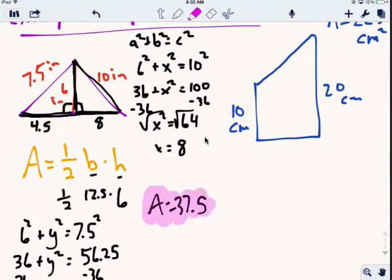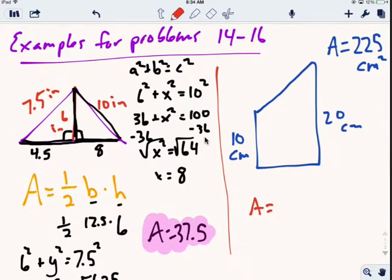For question 15, we need to know the formula for the area of a trapezoid: area equals one-half times base 1 plus base 2 times the height.